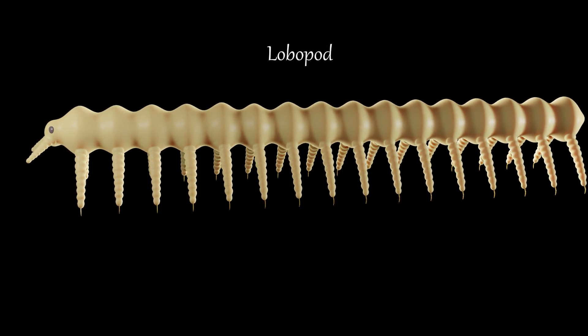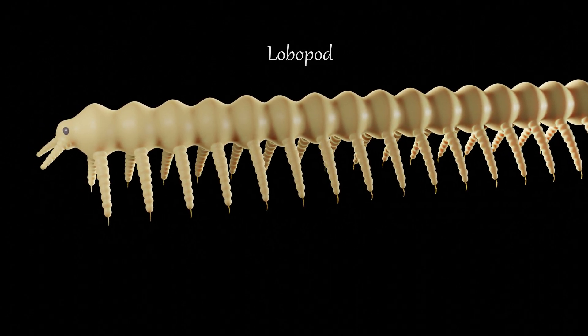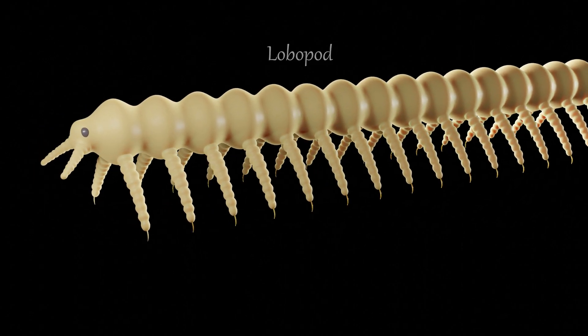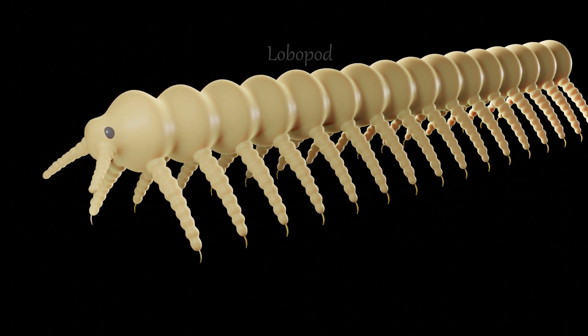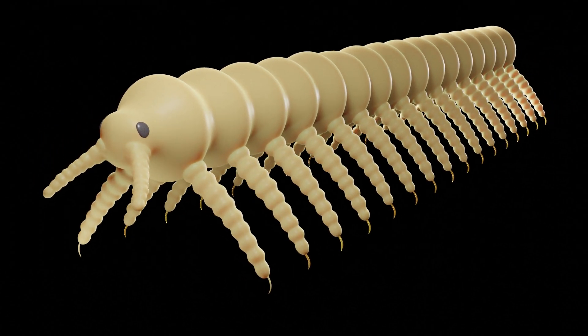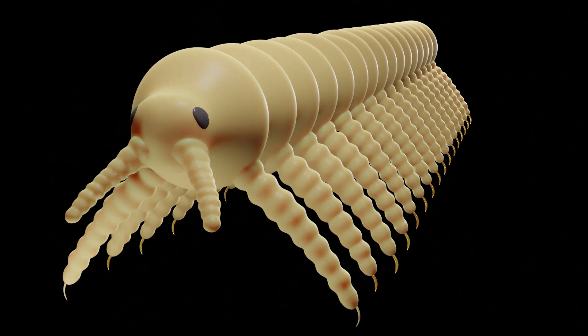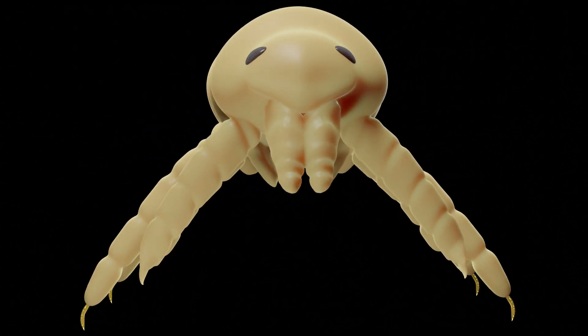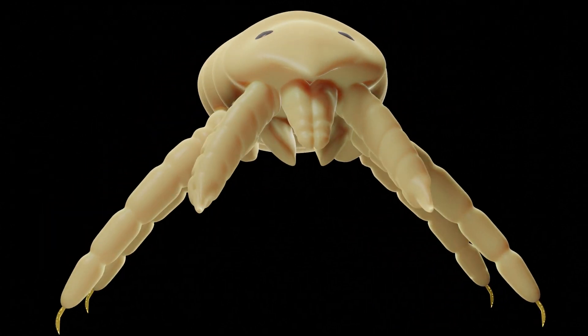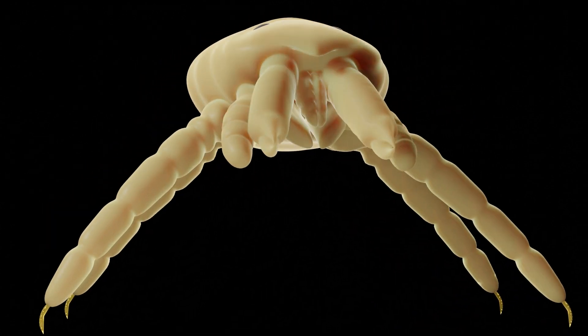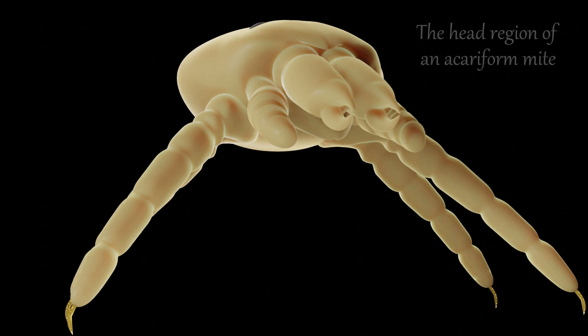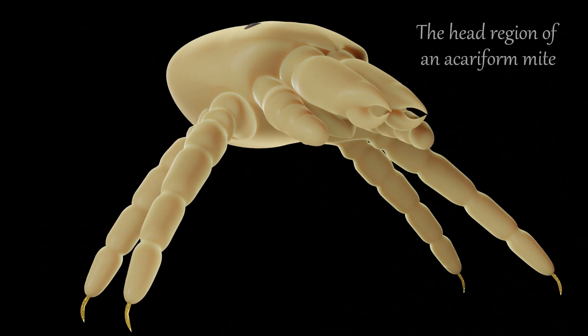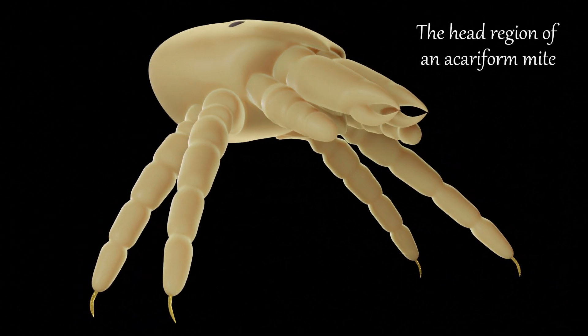In arthropods and their near relatives, the limbs have evolved into a range of different forms for carrying out various functions. For example, some of the walking legs in one lineage can form pincer-like structures in a different lineage.